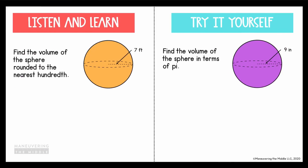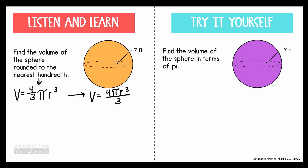Let's try some examples. Find the volume of the sphere to the nearest hundredth. The first thing we'll always do is write the formula: 4 thirds pi times the radius cubed. I want to point out that if you don't like this fraction of 4 thirds, you can rewrite the formula as 4 pi r cubed divided by 3. I'd recommend choosing a way that works best for you and sticking with it.